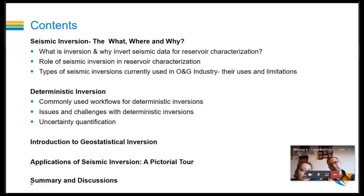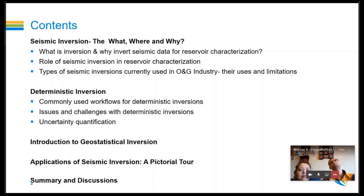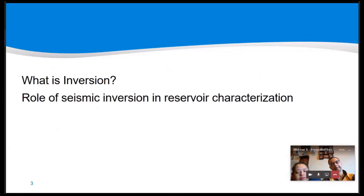For about one hour I shall talk about what seismic inversion is and the different types — two major categories: deterministic inversion and geostatistical inversion, which can also be called stochastic inversion. Geostatistical inversion is a special type of stochastic inversion. I shall take a pictorial tour of applications, followed by summary and discussion with 20 minutes to half an hour for Q&A.